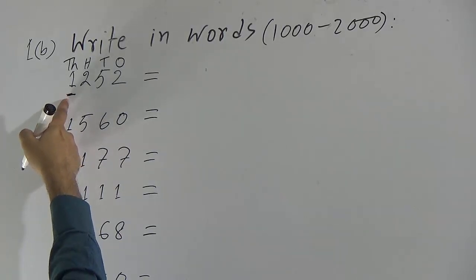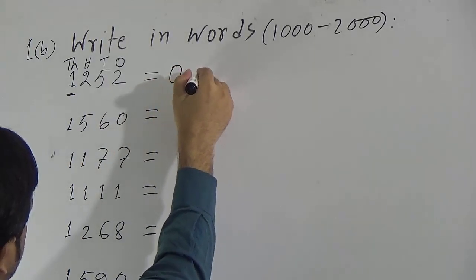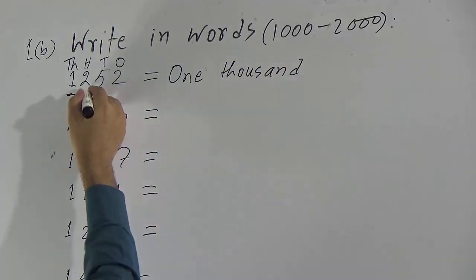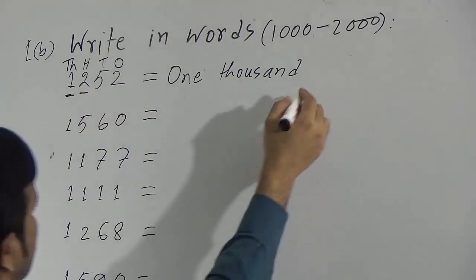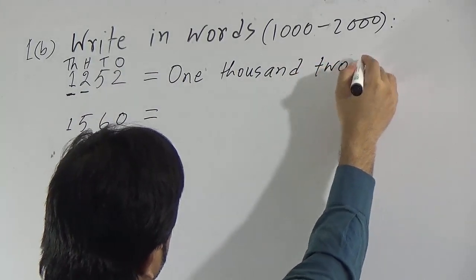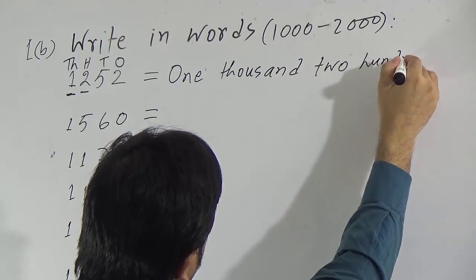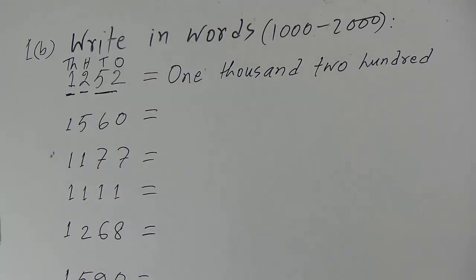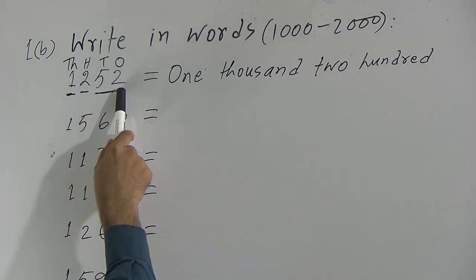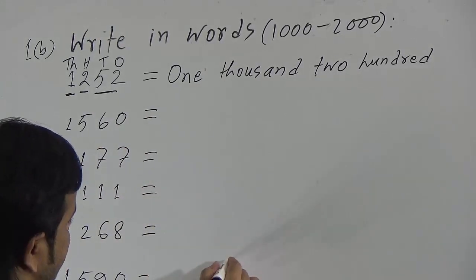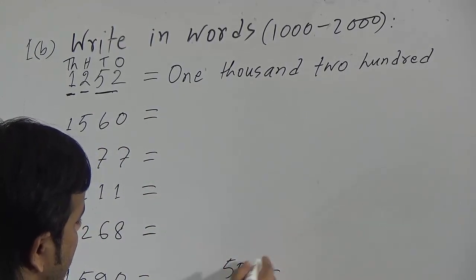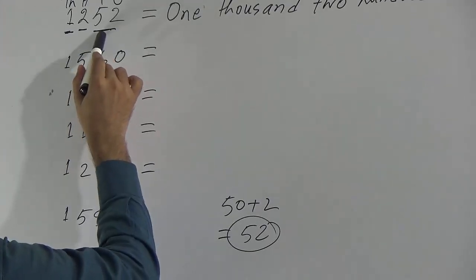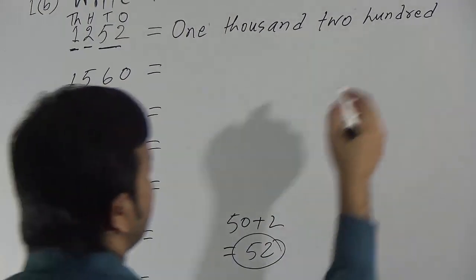As 1 is in the 1000's position, we write 1000. Here 2 is in the 100's position, so we write 200. For the last two digits, we read them combined. Here 5 is in the 10's position and 2 is in the 1's position — 5 tens means 50, and adding 2 gives us 52. So combined, we write 52.